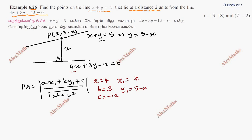If you look at the distance PA, the distance is 2. It lies at a distance of 2 units from the line. 2 equals mod of ax1, 4 into x plus by1, 5 minus x plus c, minus 12, divided by root of a squared plus b squared.